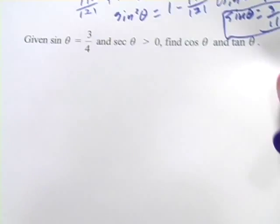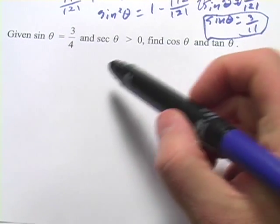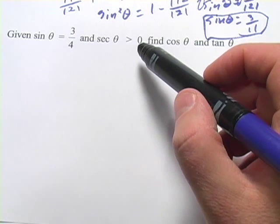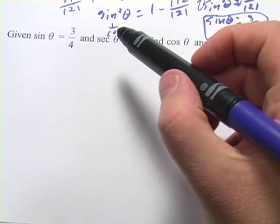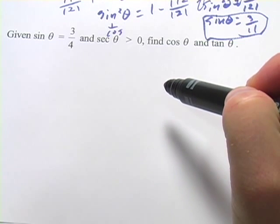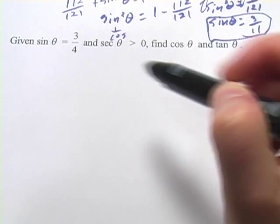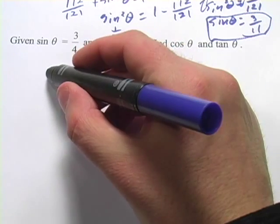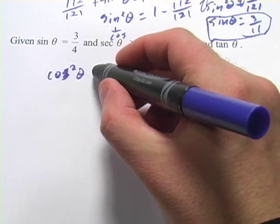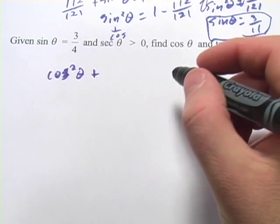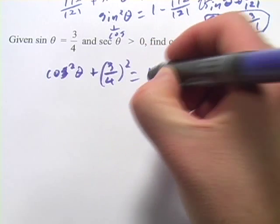Let's try another one. This one says the sine is 3 fourths and the secant is greater than 0. Remember, the secant is 1 over the cosine, so that tells us the cosine is going to be positive as well. We want to find the cosine and the tangent. Again, we'll set up cosine squared of theta plus sine squared of theta — with sine being 3 fourths squared — equals 1.